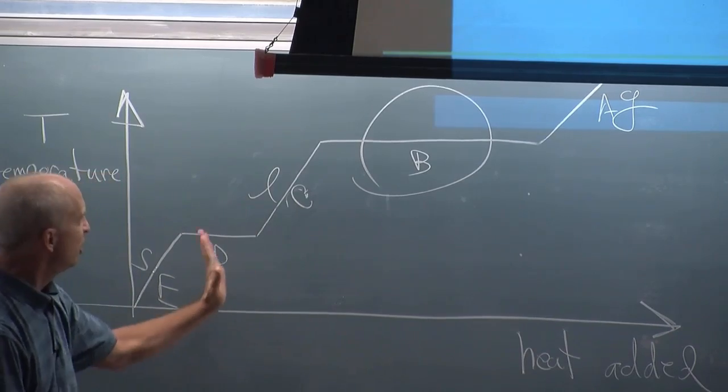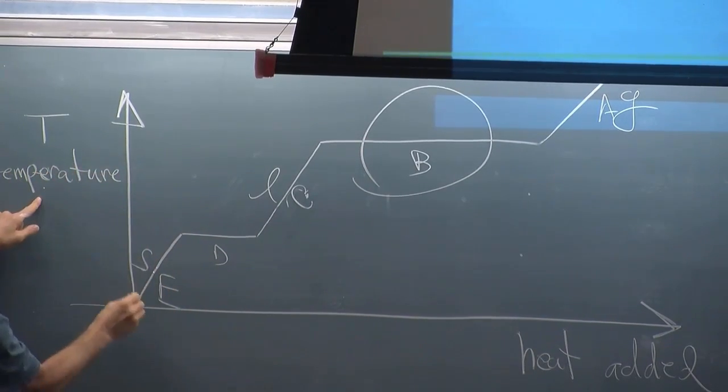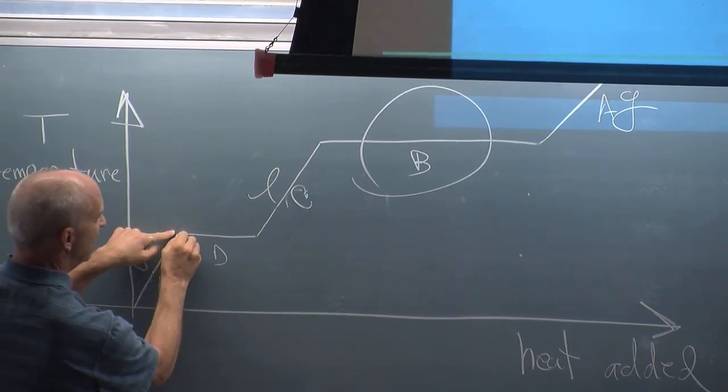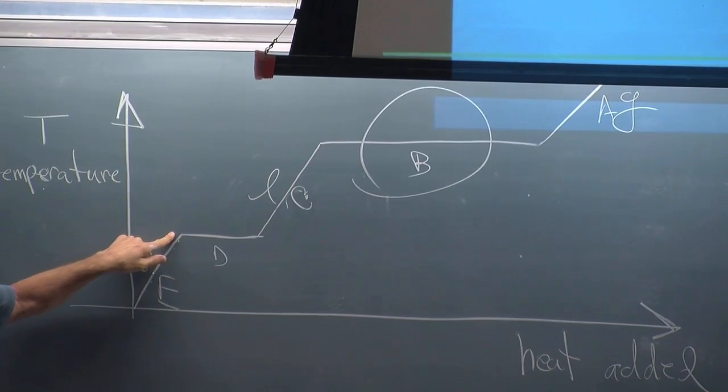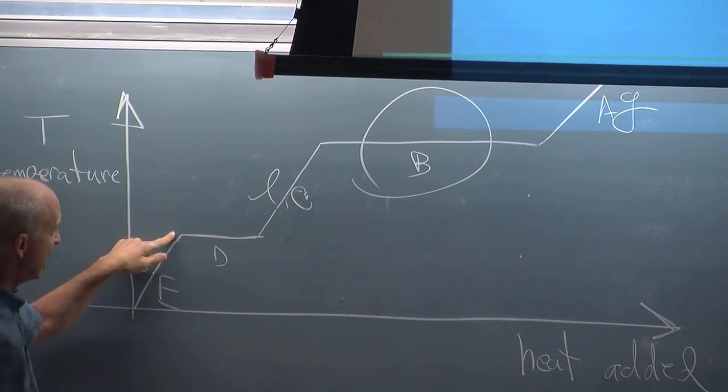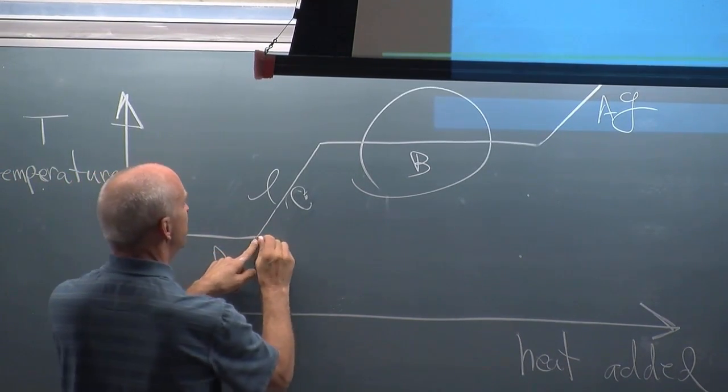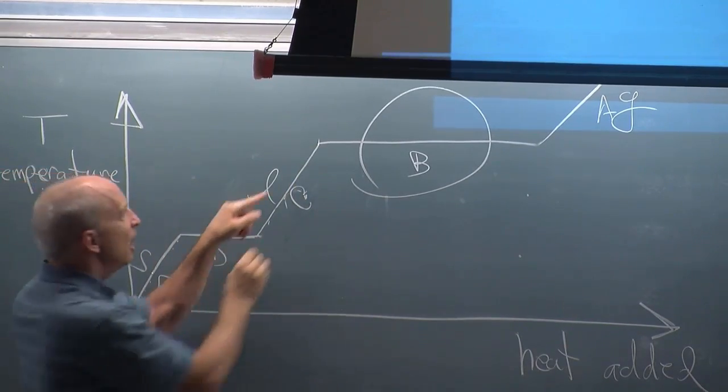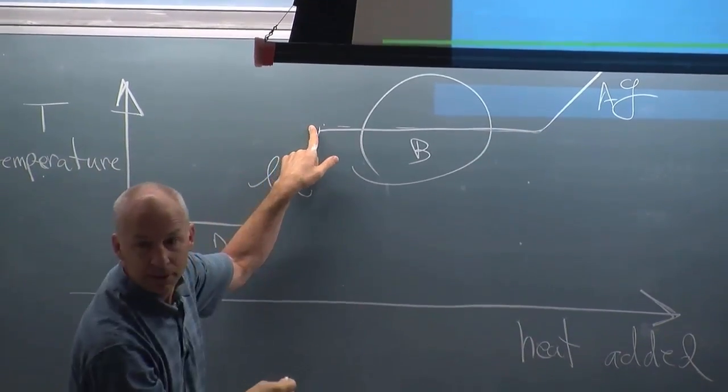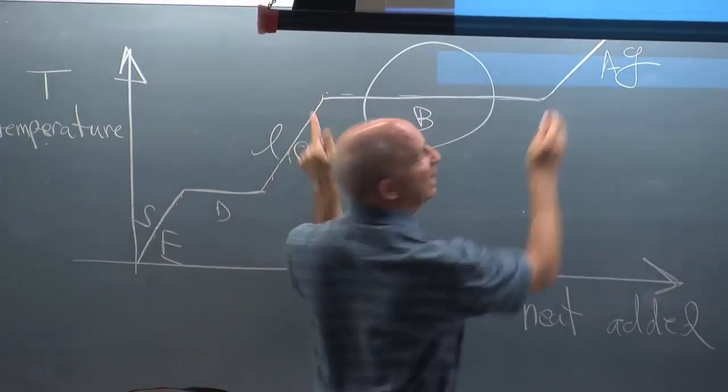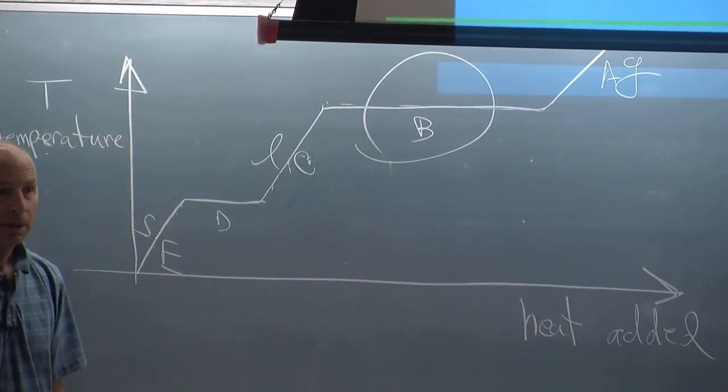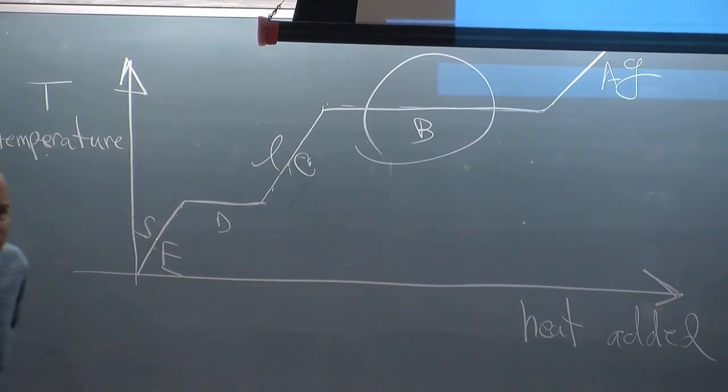As you add heat, the temperature goes up for the solid. Then you melt the solid to a liquid as you keep adding heat. And then the temperature of the liquid goes up. And then you boil the liquid. And then the temperature of the gas goes up. That's what a standard three phase diagram.